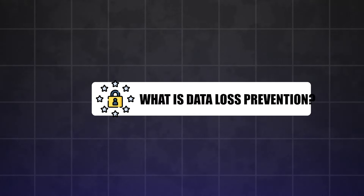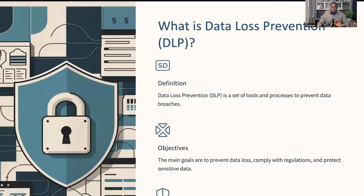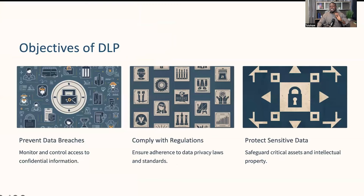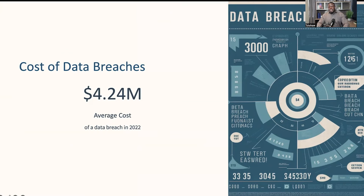Now that we know why data protection is crucial, let's define what data loss prevention is. In simple terms, DLP is a strategy that combines various tools and processes to ensure that sensitive data does not get lost or fall into the wrong hands. For example, imagine you're working at a company with confidential client information. DLP helps to monitor and control how that information is used and shared, making sure that only authorized personnel have access, preventing data breaches and helping the company comply with regulations like HIPAA or GDPR.